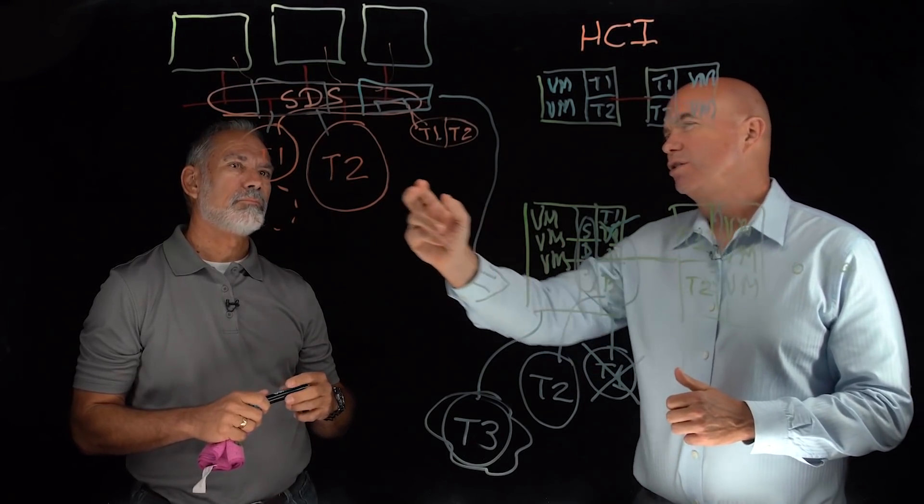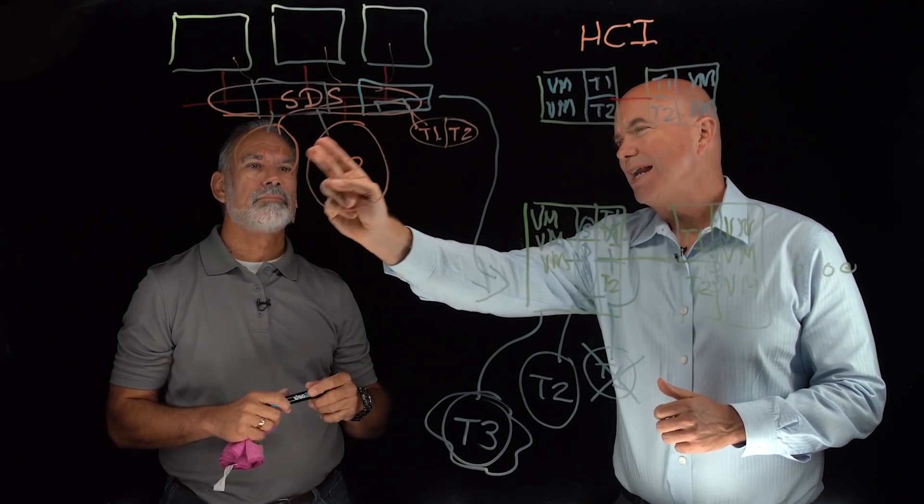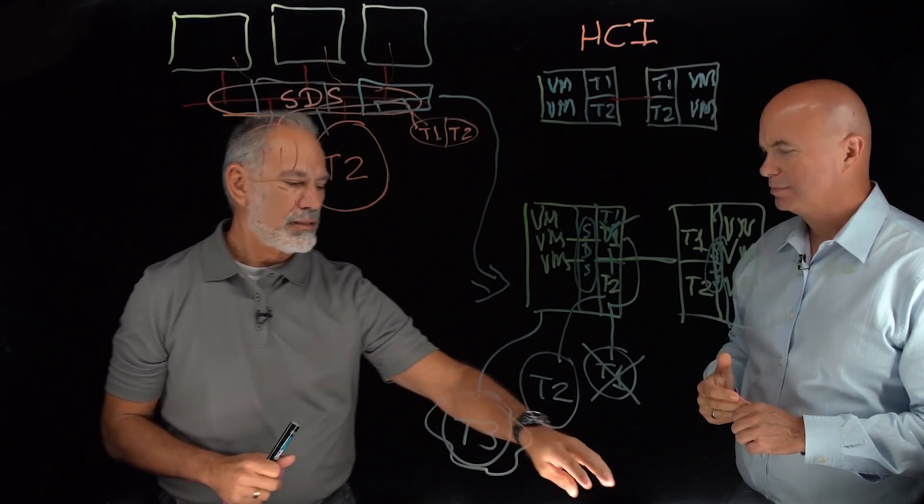So let's kind of summarize then because we talked about vulnerability and I'm assuming that that's handled because of this mirror capability right here. Right? Now the aging, does the SDS automatically move it between the tier one and the tier two? It does.